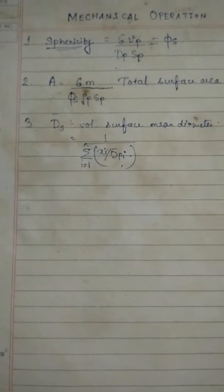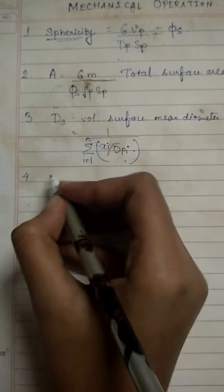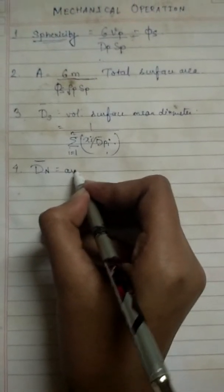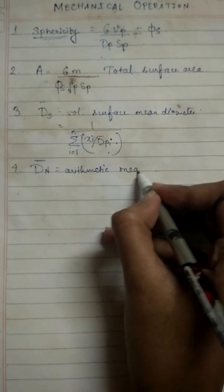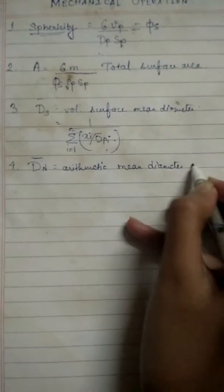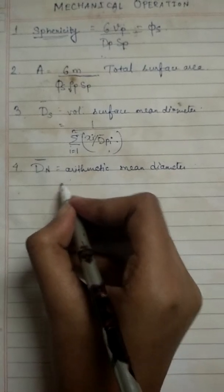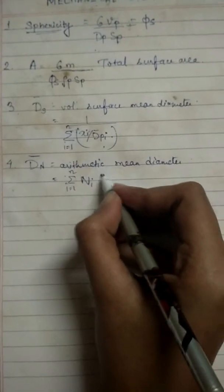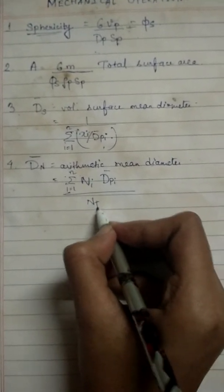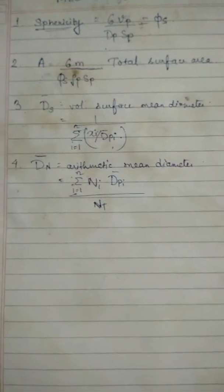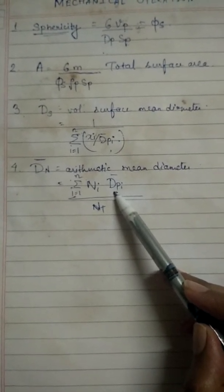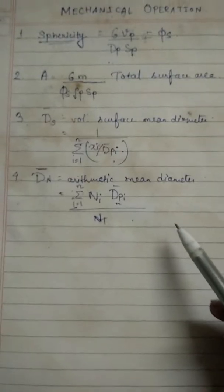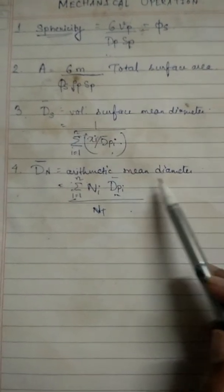If we are to find the arithmetic mean diameter, then it's denoted by dn bar, that is arithmetic mean diameter, and it's given by summation i equals 1 to n, ni into dpi by NT. Here ni means number of particles of ith nature, dpi is the equivalent diameter of the particle of ith nature, and NT is the total number of particles that you have at hand. So this will give you the arithmetic mean diameter.